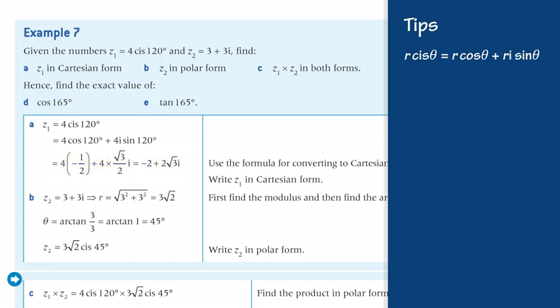Part b. To find the polar form, you need to apply the formulas: r = |z| = √(x² + y²), and θ = arg(z) = arctan(y/x).